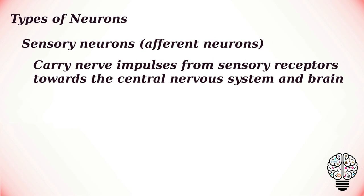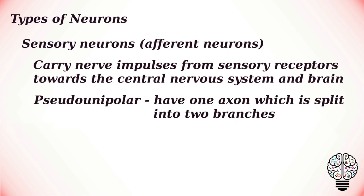Sensory neurons, sometimes referred to as afferent neurons, are nerve cells which carry nerve impulses from sensory receptors towards the central nervous system and brain. When these nerve impulses reach the brain, they are translated into sensations such as vision, hearing, taste, and touch. This sensory information can be either physical — through sound, heat, touch, and light — or chemical, through taste or smell. For example, when touching an extremely hot surface, the sensory neurons send signals to the central nervous system about the information they have received. Most sensory neurons are characterized as being pseudo-unipolar, meaning they have one axon split into two branches.